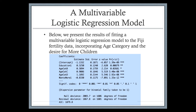We're estimating the probability of using contraceptives — or the log odds of using contraceptives — as a function of education level, age category, and whether or not they'd like more children. We've already acknowledged that wanting more children as well as age category are likely going to be confounded with the education effect.